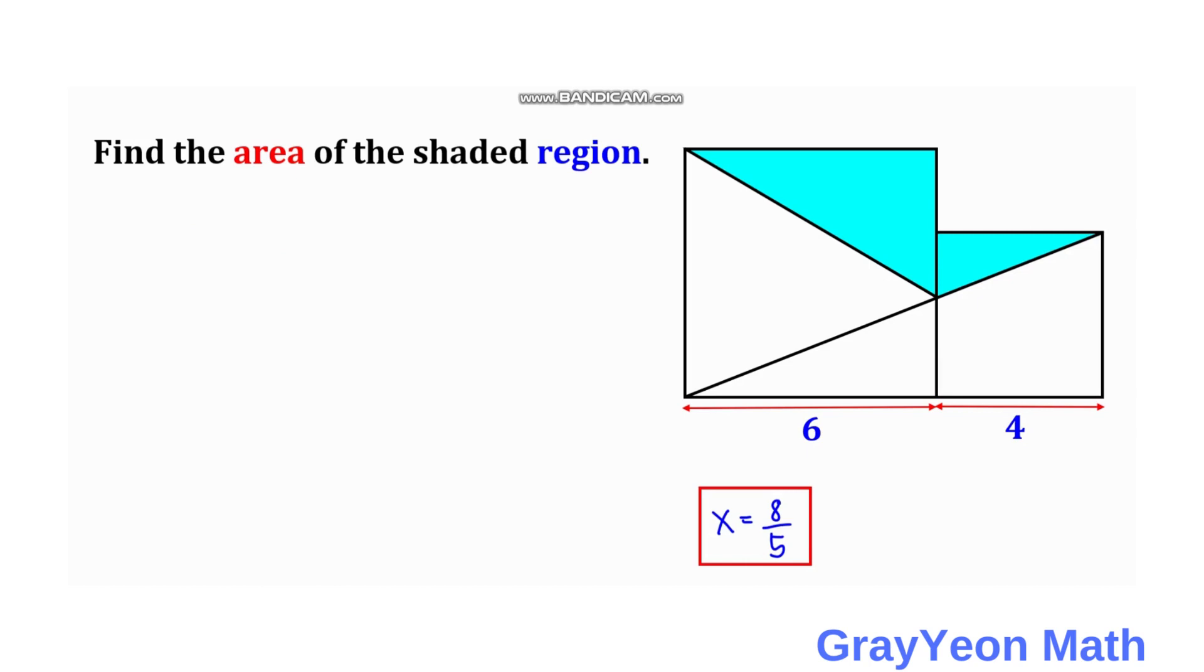So this length we labeled as x has the value 8 over 5, and this is 4. This length is actually 6 minus 4, so this becomes 2. And this length is actually 6. So it is now easy to find the area of this blue region.